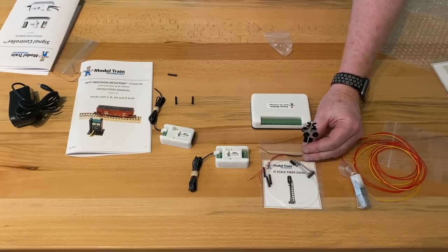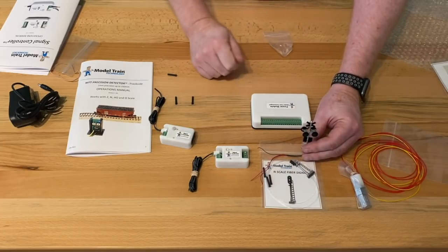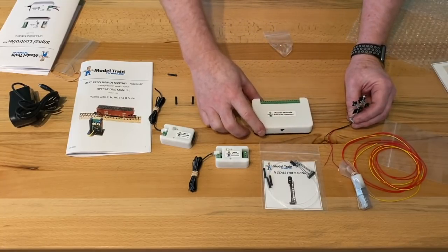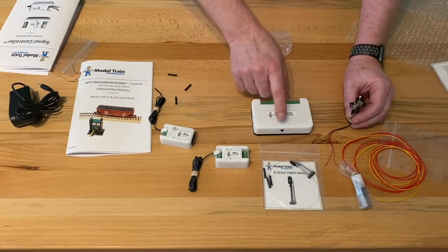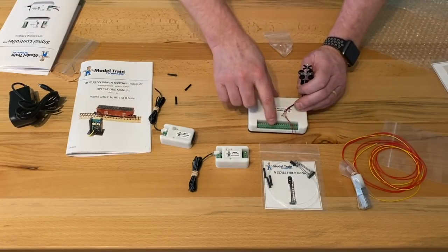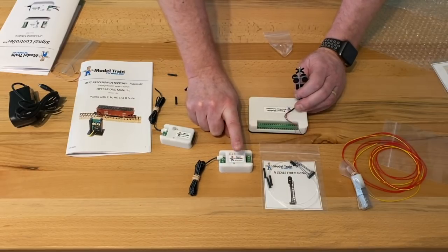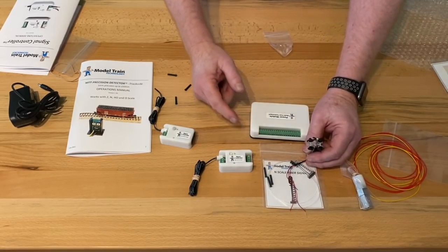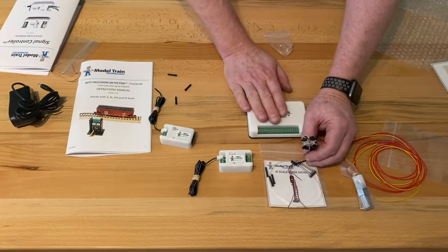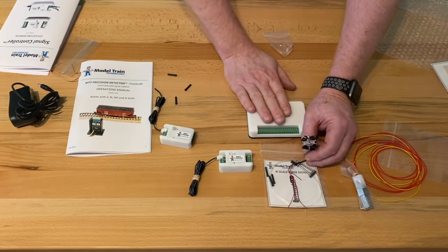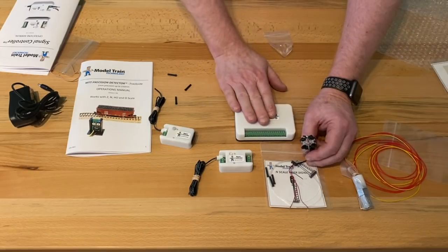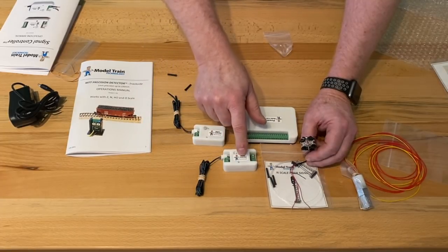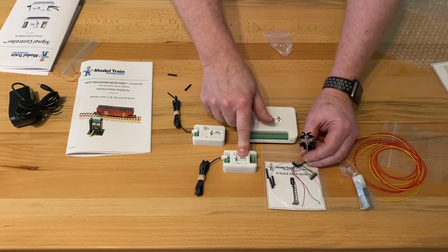However, some of the bigger scales, particularly S and O scale have 12 volt LEDs built into them. So there is a version of the power module. I should turn that around power module. That is 12 volts or 18 and 12 volts out. And when you connect 12 volts to the signal controller, it by default puts out 11 volts automatically. Now you might want to have a mixed system where you have some items, some lights that are 12 volts and some that are five.